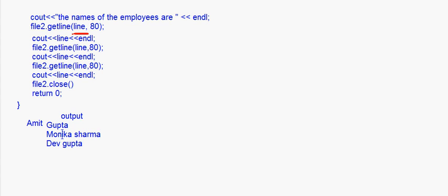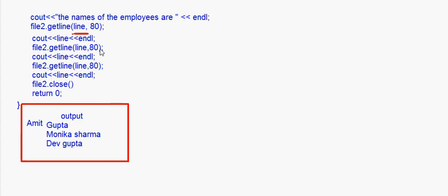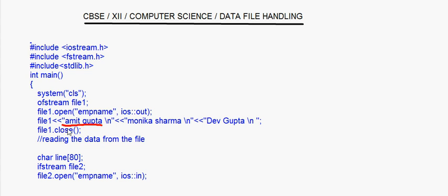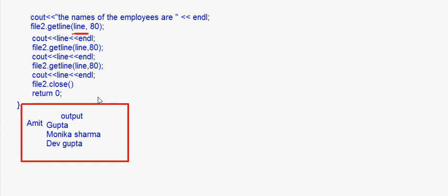There are different ways of reading from a file. We have seen the way in which you read a whole line and display it. While writing to the file you know how to do it properly. Supposing you want to write the names of five employees or details of five employees, you can put a for loop and put the details of the five employees, and then it can be read.